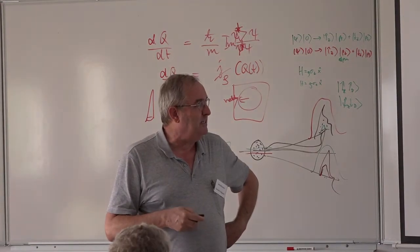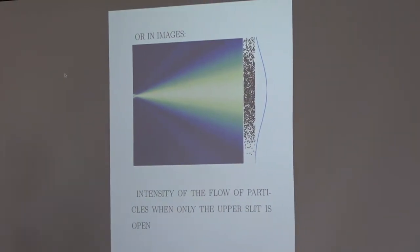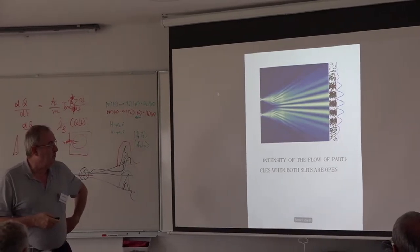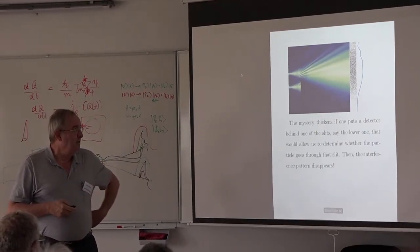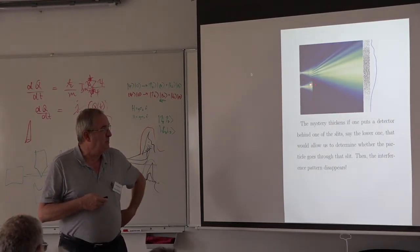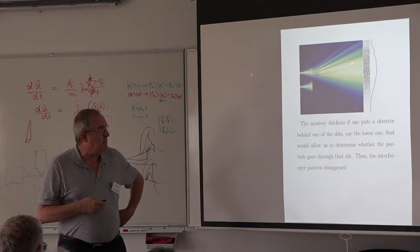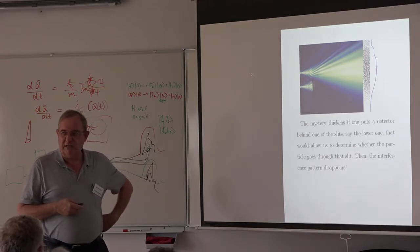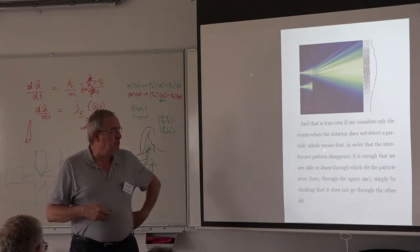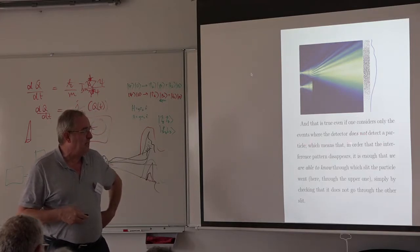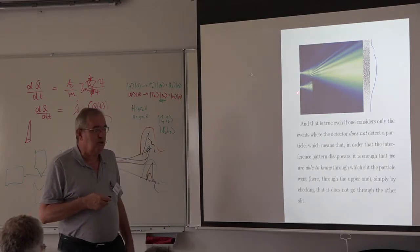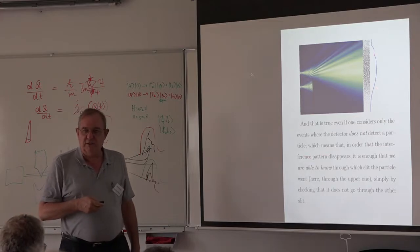We already saw this morning what the double-slit experiment is. That's one flow, and that's the other flow, and that's when the two slits are open. Now, if you put a detector here that will see if a particle goes to the lower slit, and you look at the particle going to the upper slit, then the interference pattern disappears. This is true even if you consider only the events where the detector does not detect a particle — so you know the particle goes to the upper slit — and then the interference pattern disappears.